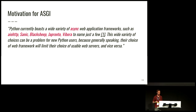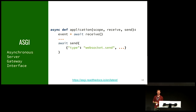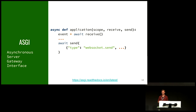If I take the original WSGI motivation and change it slightly: 'Python currently boasts a wide variety of async web frameworks — AIOHTTP, Sanic, Blacksheep, Gpronto, and Vibora. This variety of choices can be a problem because their choice of web framework will limit their choice of usable web servers and vice versa.' This goes beyond just new Python users — it's a limitation for all of us, and good motivation for a new standard in the asynchronous world. That standard should be ASGI — the Asynchronous Server Gateway Interface, named to make the parallel to WSGI. ASGI defines your application as a callable — but in this case, it's a coroutine function, so it's async by default.